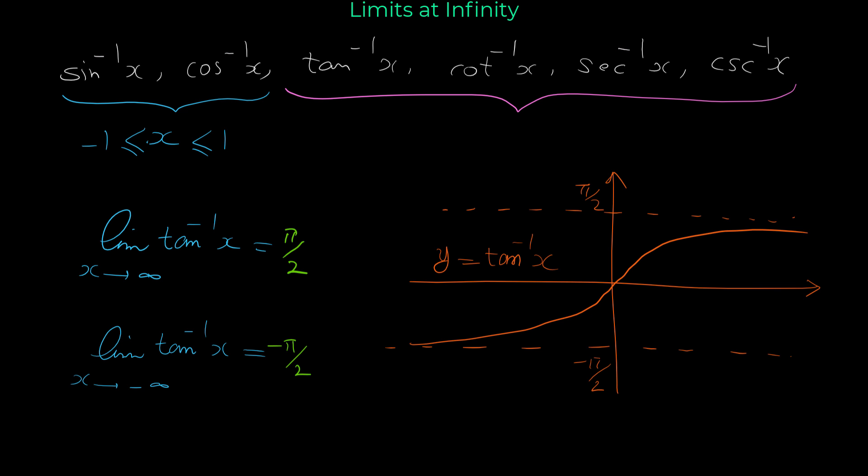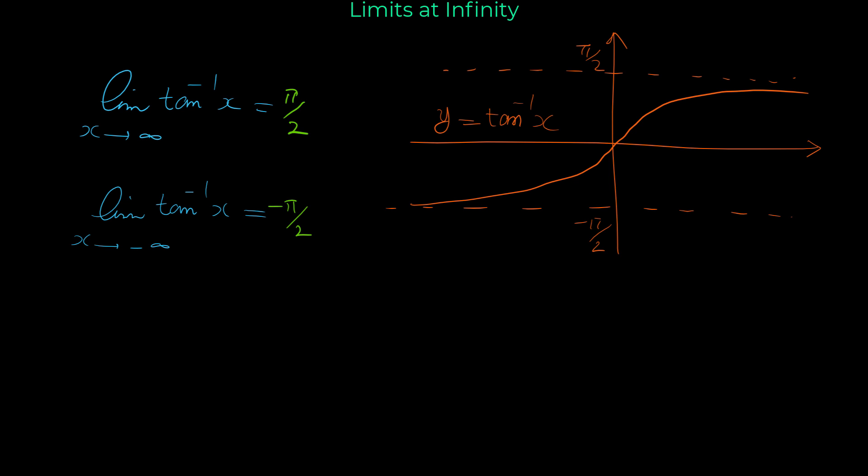For cotangent inverse, secant inverse, and cosecant inverse, we can also look at their graphs and find the horizontal asymptotes to determine their limits at infinity.